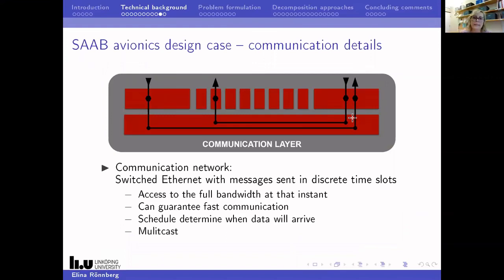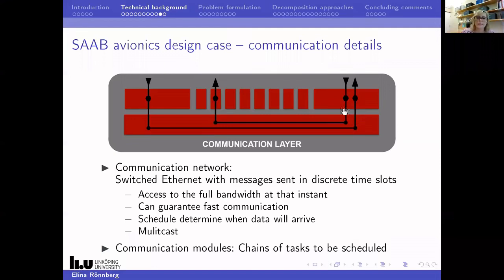Some more details about the communication protocol: the communication network is ordinary Ethernet, but the protocol is designed so that messages are sent in discrete time slots. This means you have access to the full bandwidth at that instant — you can use all available communication resources and send data really fast. The schedule decides exactly when to send and receive data. It also supports multicast, so you can send to multiple receivers. An essential part: if you want to use the communication network, you have to perform several activities on the communication modules, and that's the cost of this architecture.